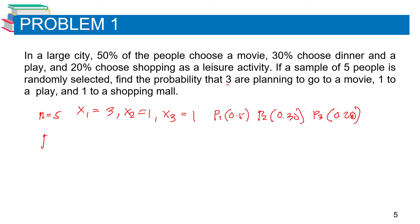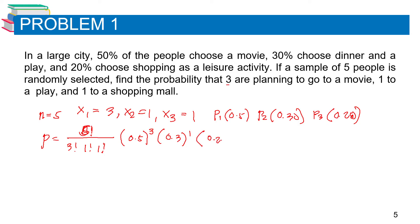Using the formula: P(x) equals 5 factorial over 3 factorial times 1 factorial times 1 factorial, multiplied by 0.5 raised to 3, times 0.3 raised to 1, times 0.20 raised to 1. Calculating this with a calculator gives a result of 0.15. So the probability that 3 people plan to go to a movie, 1 to a play, and 1 to shopping is 0.15.